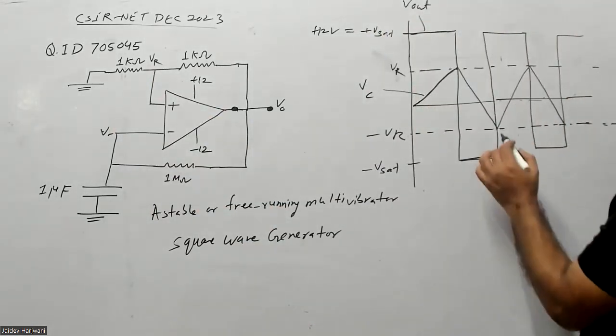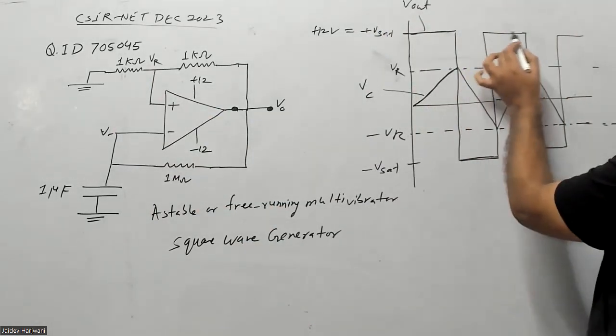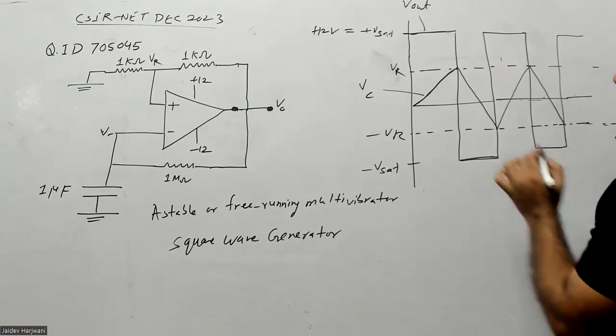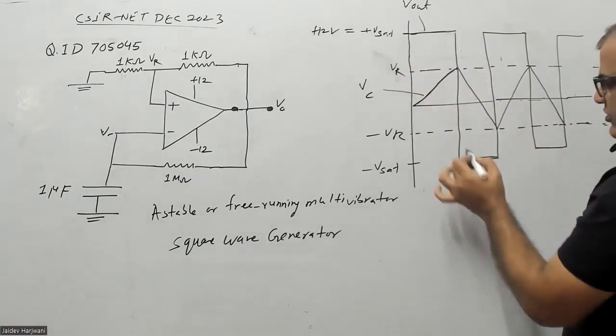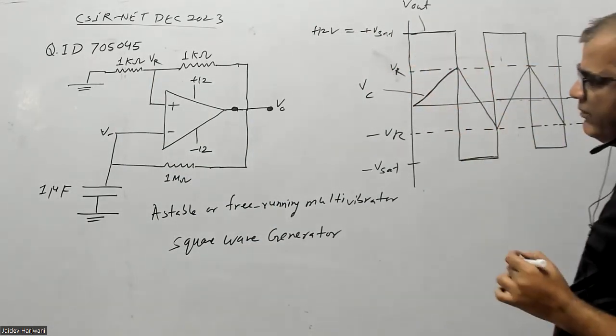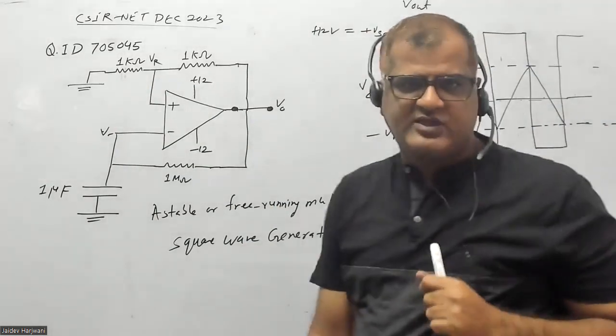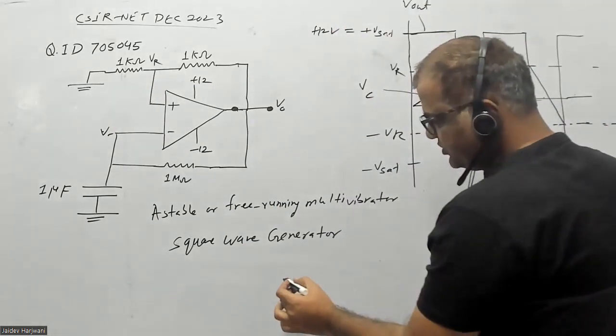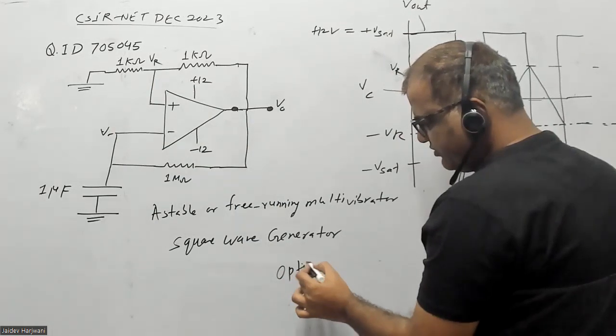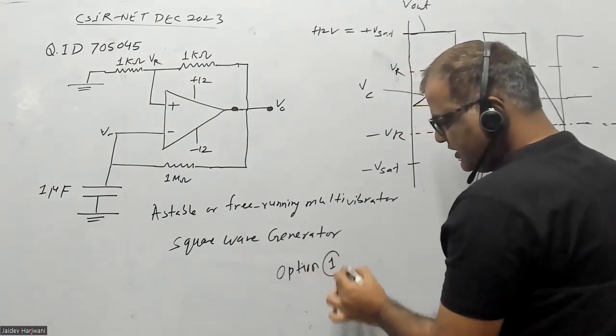And the output will go again to positive saturation. So the output of the op-amp will be V plus saturation to minus V saturation, and this is given as option one. So option one is the correct answer.